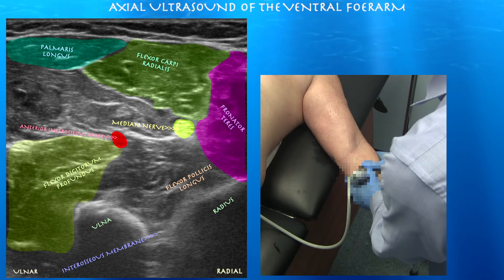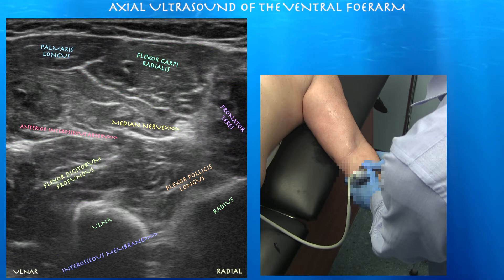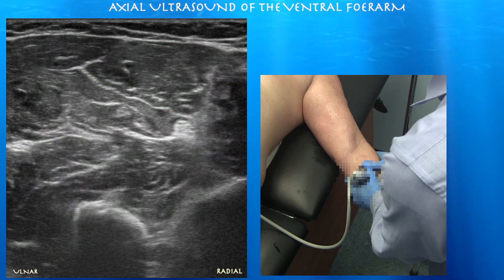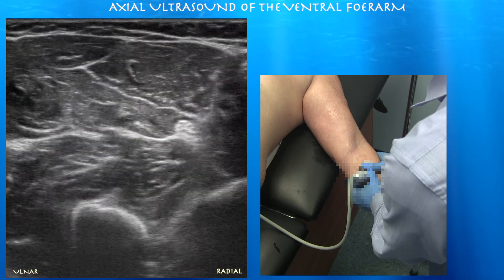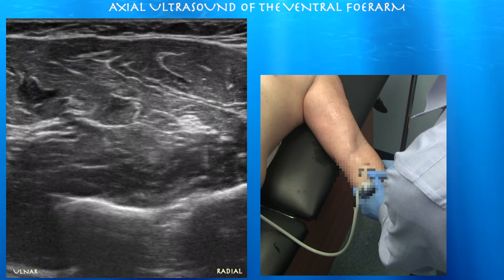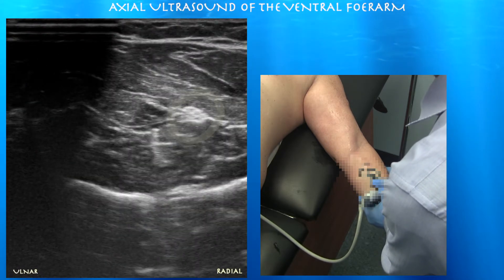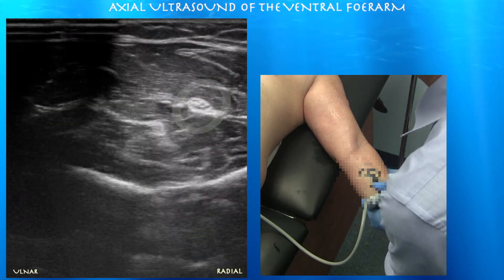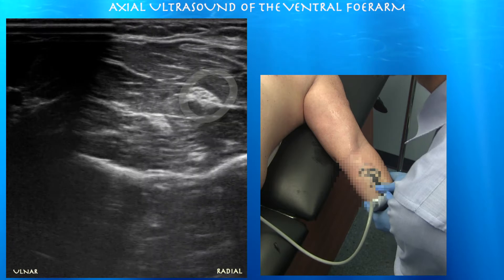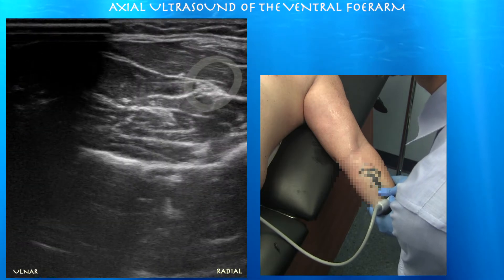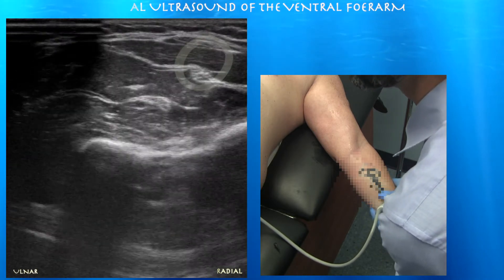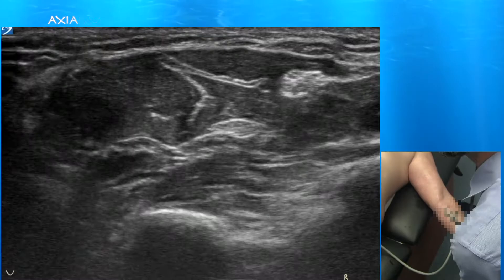You can appreciate the median nerve and the overlying flexor musculature. You can see the median nerve between the flexor digitorum profundus and superficialis. The median nerve is hyperechoic in this part of the arm, whereas in the carpal tunnel it's actually hyperechoic.